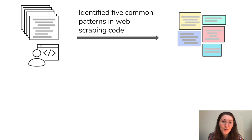To develop a proof-of-concept purpose-first programming system, we identified five common patterns of web scraping code that use the BeautifulSoup Python library. We identified these patterns from code on GitHub and validated the authenticity and coverage of the patterns with two experts.